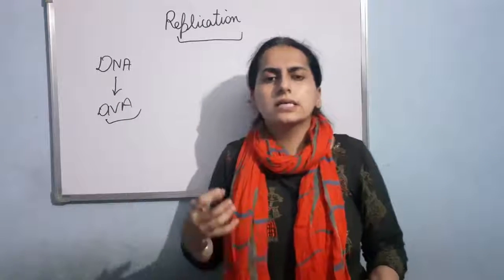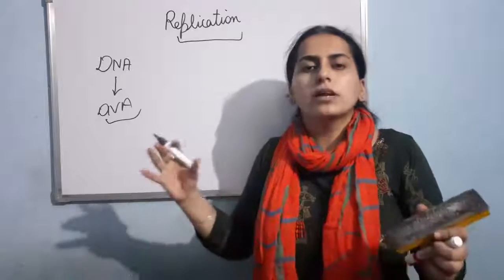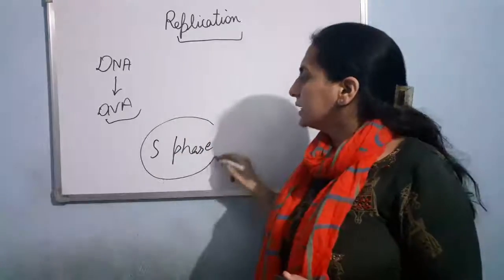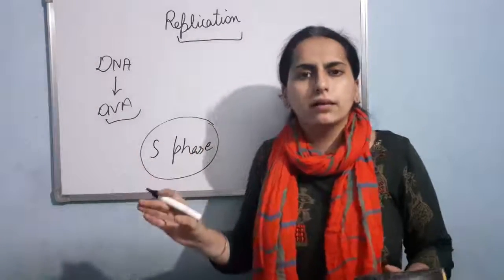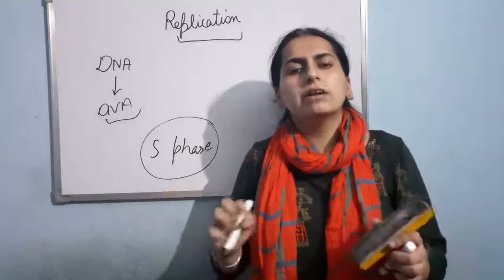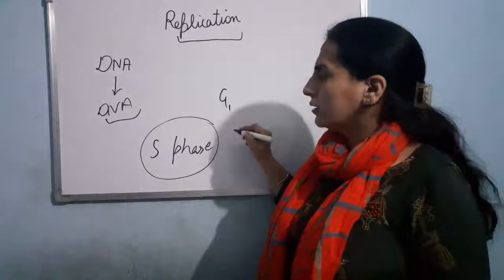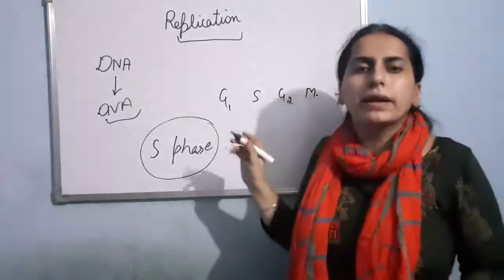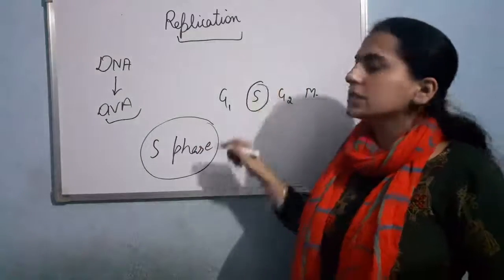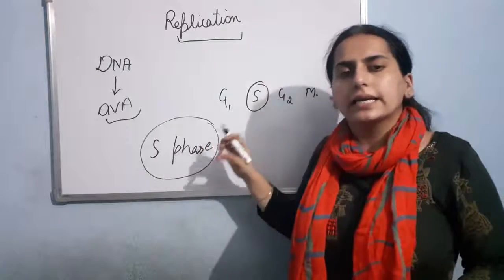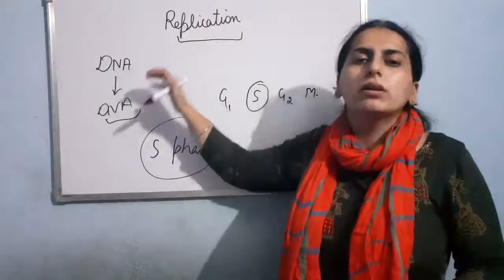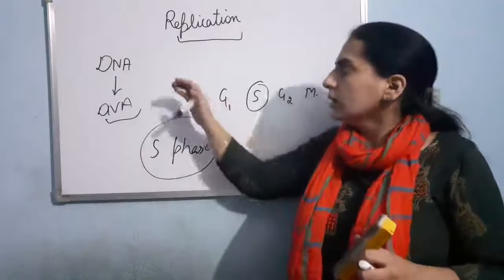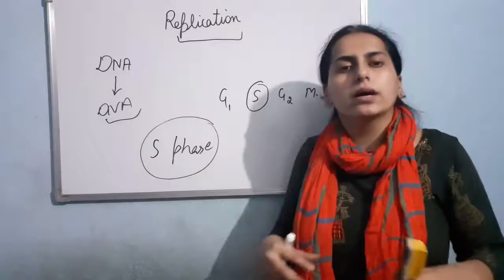In your body, cells are dividing. In the divisional process, in the S phase basically, DNA replication takes place — this you have done in class 11. In cell division, the different phases are G1, then S phase, then G2 phase, then M phase, if I talk about mitosis. So basically in the S phase of the cell cycle, the DNA replication takes place, meaning the DNA will make a copy of itself. This is important so that the DNA can be transferred into the daughter cells.